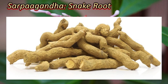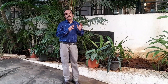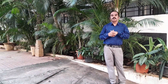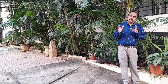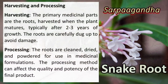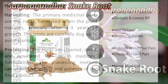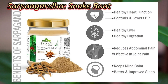The primary parts used are the roots, which are harvested when the plant is mature — typically two to three years old. The roots are carefully dug to avoid damage, then cleaned, dried, and powdered. This powder is used in the preparation of medicines.